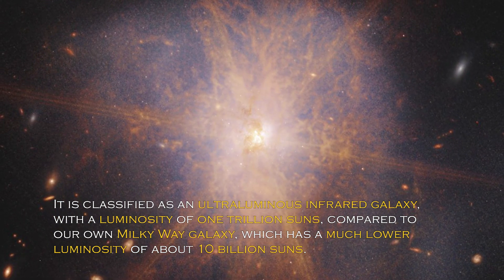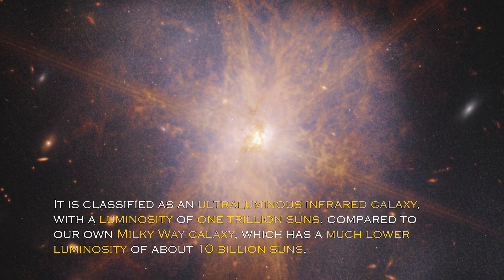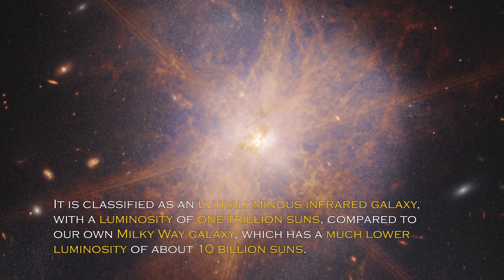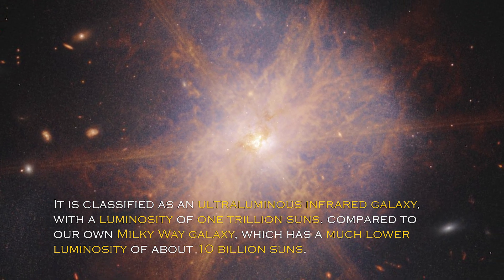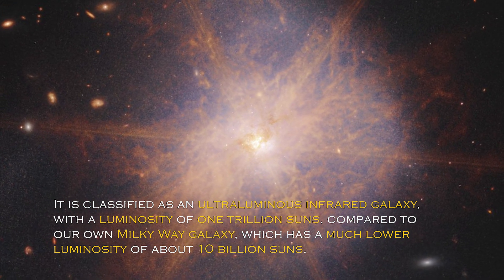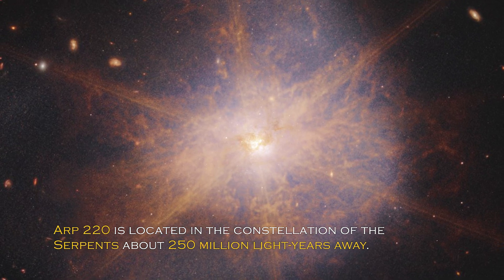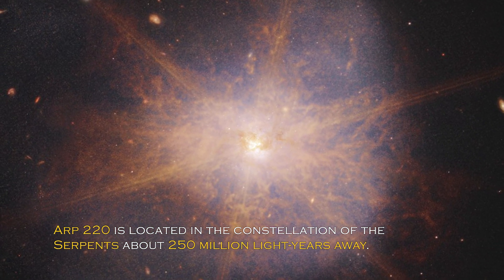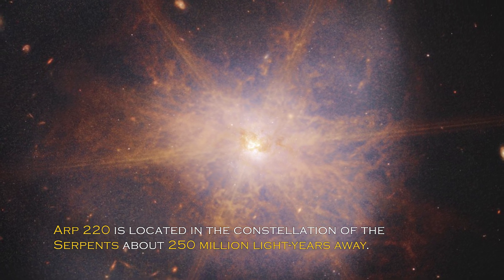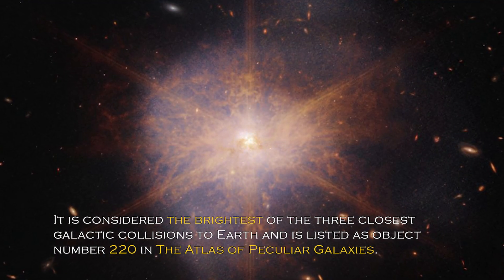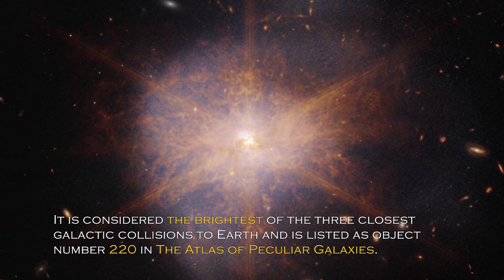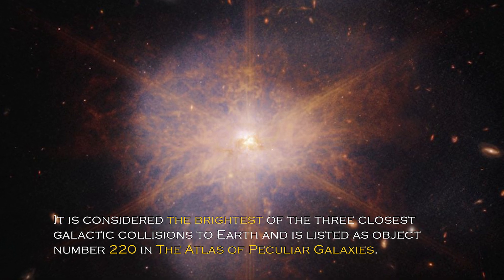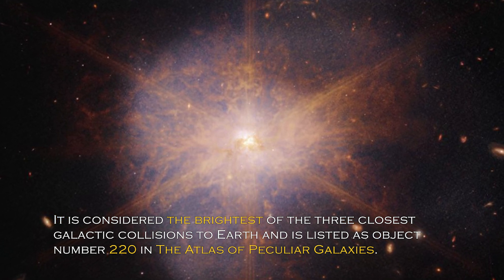It is classified as an ultra-luminous infrared galaxy, with a luminosity of trillion suns compared to our own galaxy, the Milky Way, which has much lower luminosity of about 10 billion suns. ARP 220 is located in the constellation of the Serpents, about 250 million light-years away. It is considered the brightest of the three closest galactic collisions to Earth, and it is listed as object number 220 in the Atlas of Peculiar Galaxies.